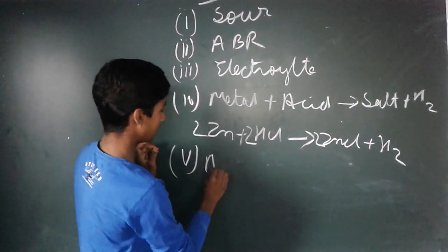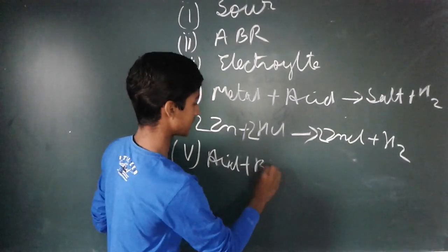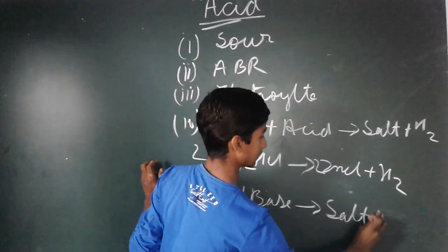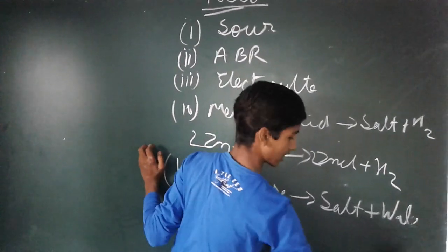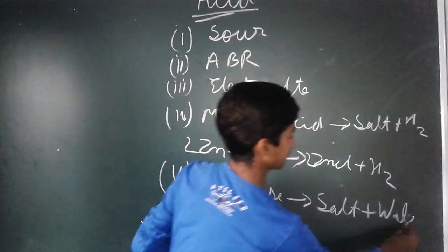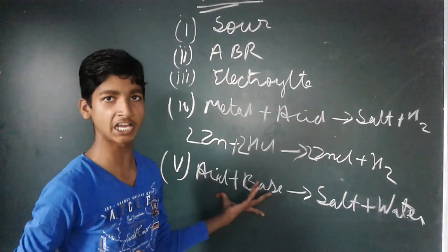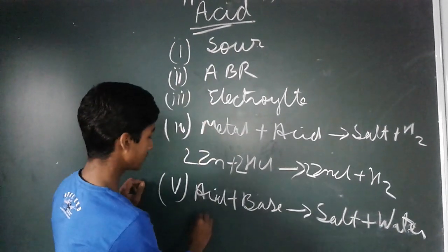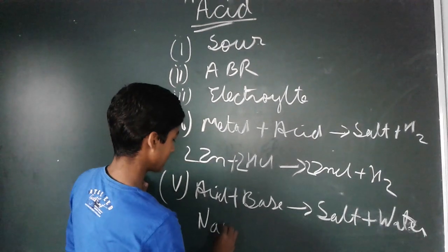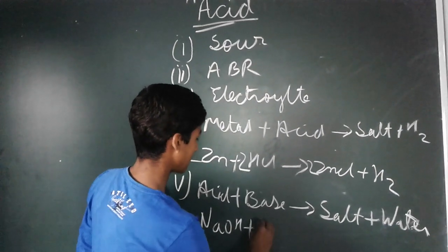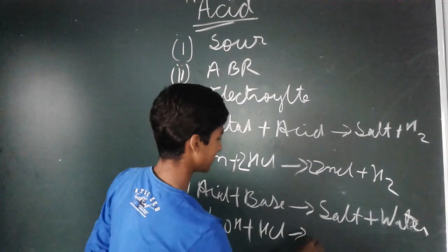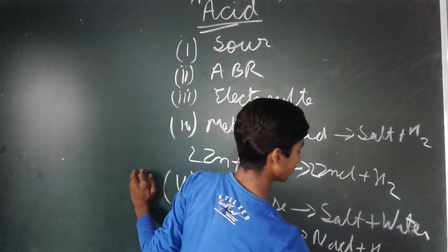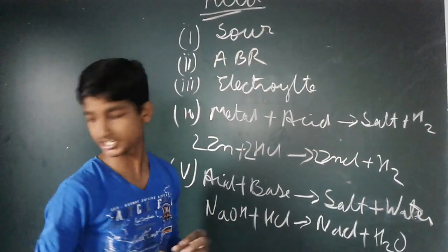When acid reacts with base, it forms salt and water. This is also called a neutralization reaction. Whenever acid and base react, they form salt and water. For example, sodium hydroxide is the base and HCl is the acid — the salt formed is sodium chloride and water is also produced. This is called a neutralization reaction.